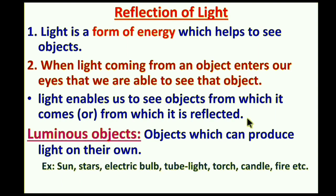Examples of luminous objects are: the sun, which produces light itself; stars, which also produce light themselves; electric bulbs, torches, candles, fire, etc. Objects which can produce light on their own are called luminous objects.